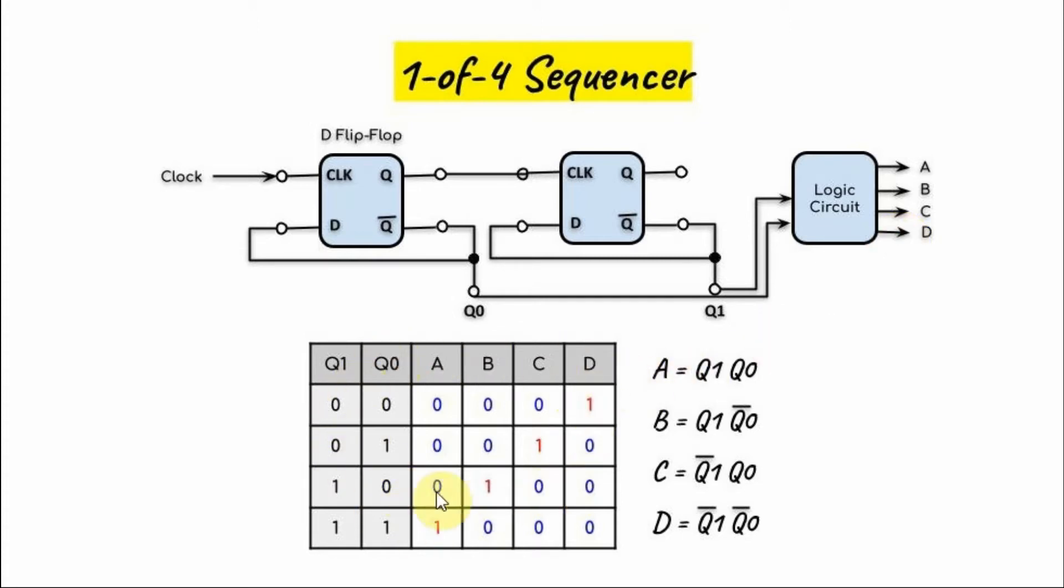The truth table for this is shown here, and from the truth table we can then determine the Boolean expressions for A, B, C, and D.